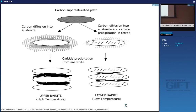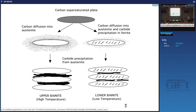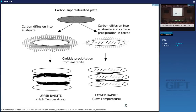To summarize the mechanism of the bainite transformation: the plate forms exactly like martensite without the diffusion of carbon. The difference arises because the driving force is small and the austenite is mechanically weak. Upper bainite forms at a relatively high temperature so the carbon has an opportunity to escape, and then it precipitates as cementite from the austenite. In the case of lower bainite the temperature is relatively low, so the carbon takes a greater time to escape — there's an opportunity for particles to precipitate inside the plate and fewer particles to precipitate between the plates.